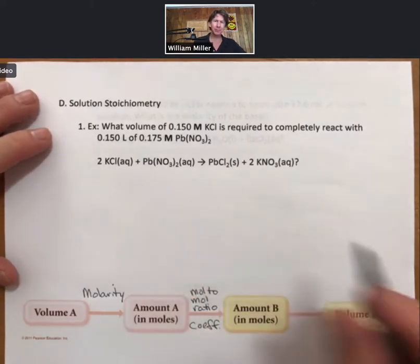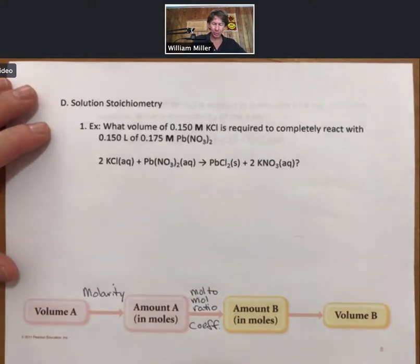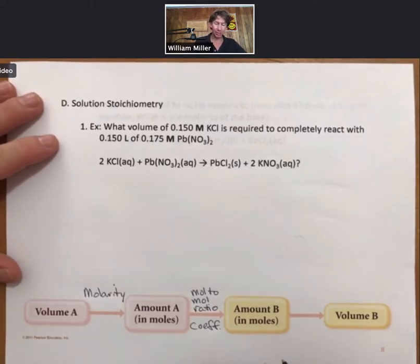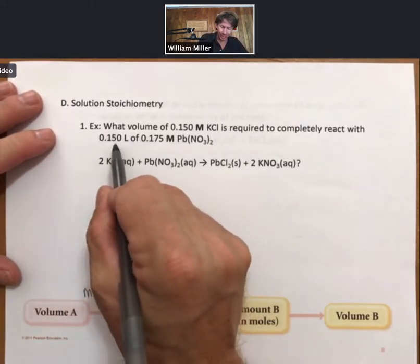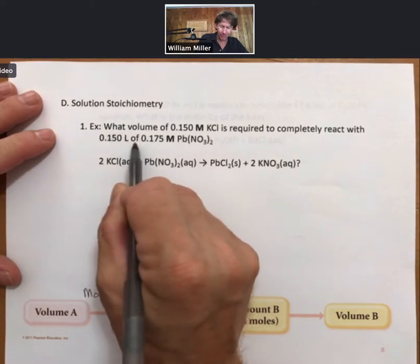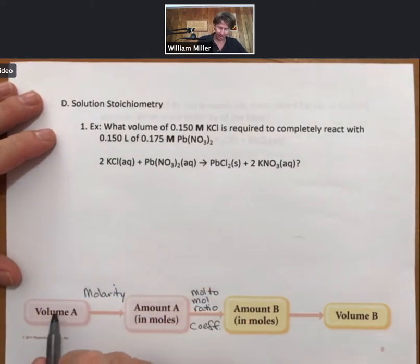And here's a very typical example. What volume of 0.150 molar potassium chloride is required to completely react with 0.150 liters of 0.175 molar lead-to-nitrate? You'll note that we have a volume and molarity, so these two numbers are going to be multiplied by each other. They're going to be our A substance.